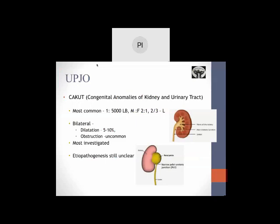UPJO is grouped under the synonym CAKUT, congenital anomalies of the kidney and urinary tract. It is the most common anomaly found in 1 in 5000 live births and 1 in 1250 requiring surgical intervention. It is more common in males 2 to 1, and two-thirds are left-sided. It is the most investigated form of CAKUT and etiopathogenesis still remains unclear.